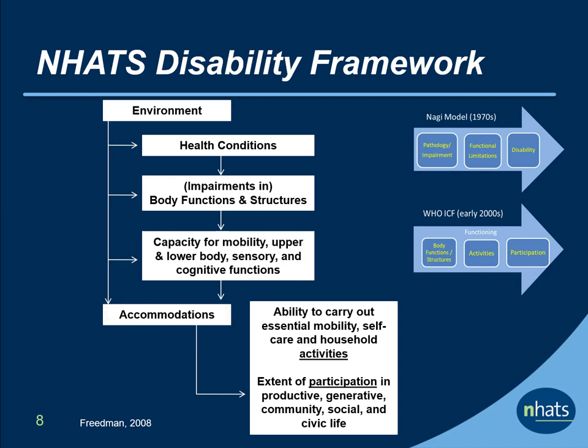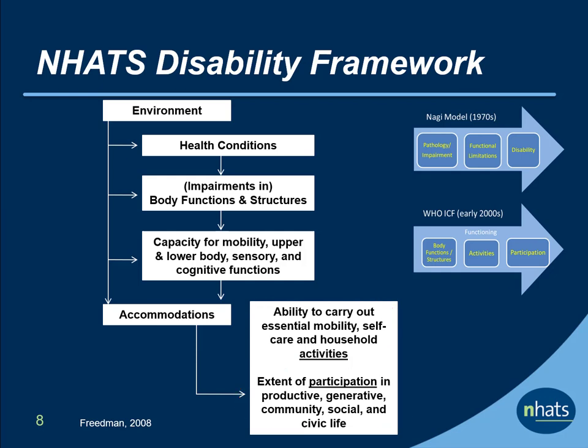Second, the framework makes a distinction between the ability to carry out by oneself essential activities, including mobility and self-care activities and household-related activities, and the extent of participation in valued activities. Third, the framework is explicit that a person's environment, broadly defined to include physical, social, technological, and service-related aspects, influences the entire process.